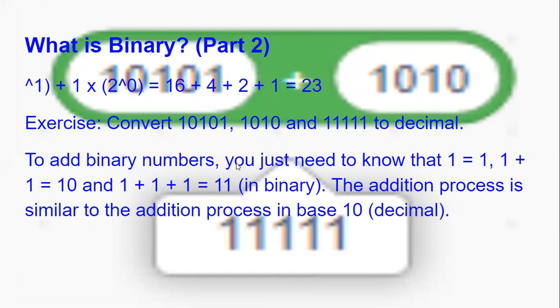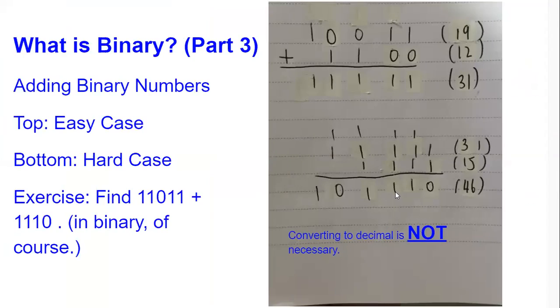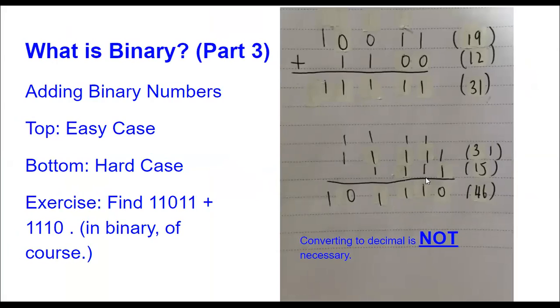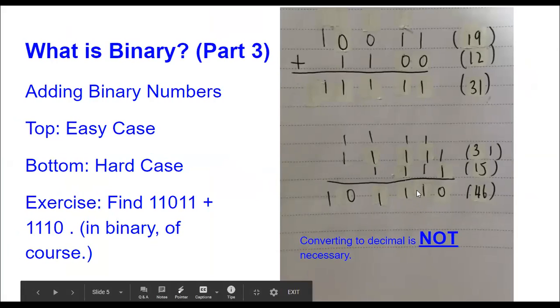To add binary numbers, you just need to know that 1 equals 1, 1 plus 1 equals 10, and 1 plus 1 plus 1 equals 11 in binary of course. The addition process is similar to the addition process in base 10.